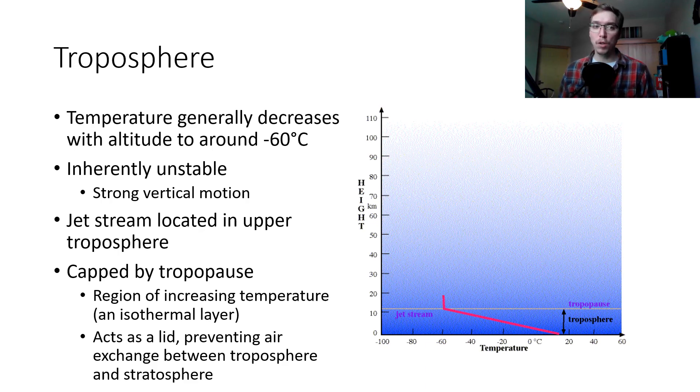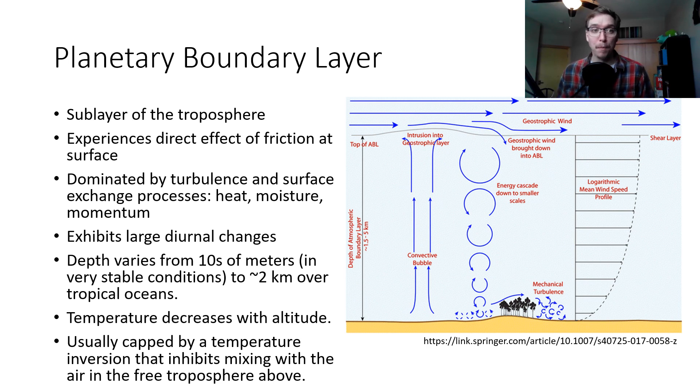So this is a sub-layer within our troposphere from the surface to a little bit above. This is the region within our atmosphere, within the troposphere, that experiences the direct effect of friction at the surface. It is dominated by turbulent motion and the surface exchange processes of heat, moisture, and momentum. It exhibits large diurnal changes, day to day changes. So throughout the day when the surface is cool you're not getting those updrafts, but as you're warming that hot air is rising and you're getting substantial turbulent mixing going on. The depth varies from tens of meters in very stable conditions to two kilometers over tropical oceans.